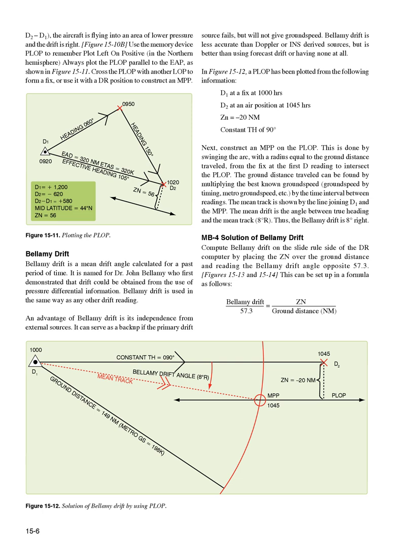In Figure 15-12, a PLOP has been plotted from the following information: D1 at a fix at 1000 hours, D2 at an air position at 1045 hours, Zn equals minus 20 nautical miles, constant TH of 90 degrees. Next, construct an MPP on the PLOP. This is done by swinging the arc, with a radius equal to the ground distance traveled, from the fix at the first D reading to intersect the PLOP. The ground distance traveled can be found by multiplying the best known ground speed by the time interval between readings. The mean track is shown by the line joining D1 and the MPP. The mean drift is the angle between true heading and the mean track, 8 degrees right. Thus, the Bellamy Drift is 8 degrees right.